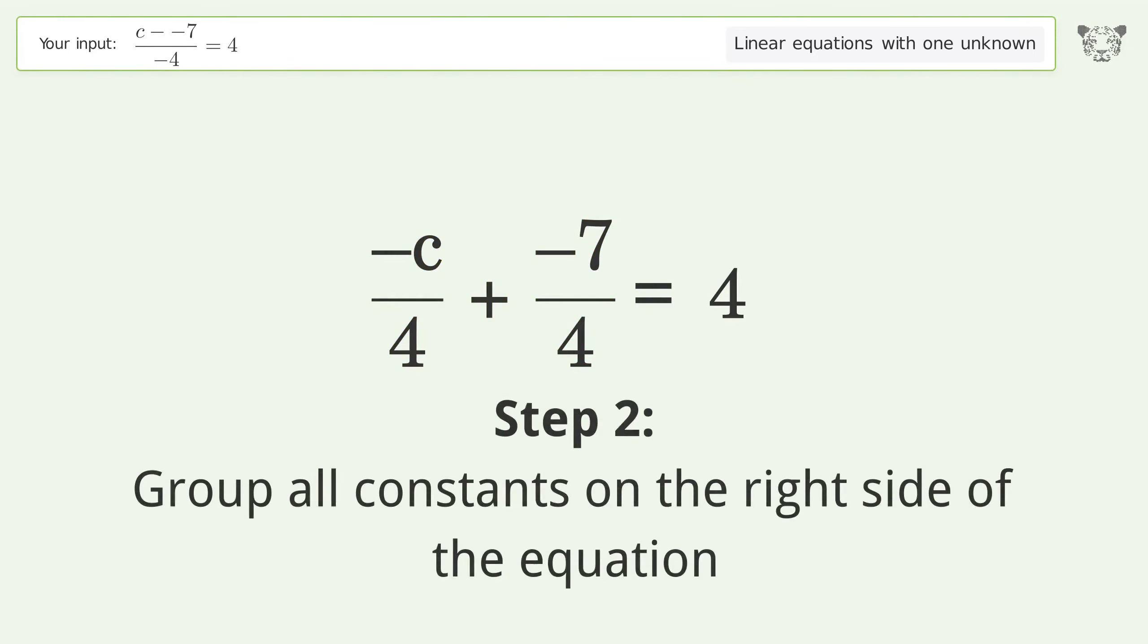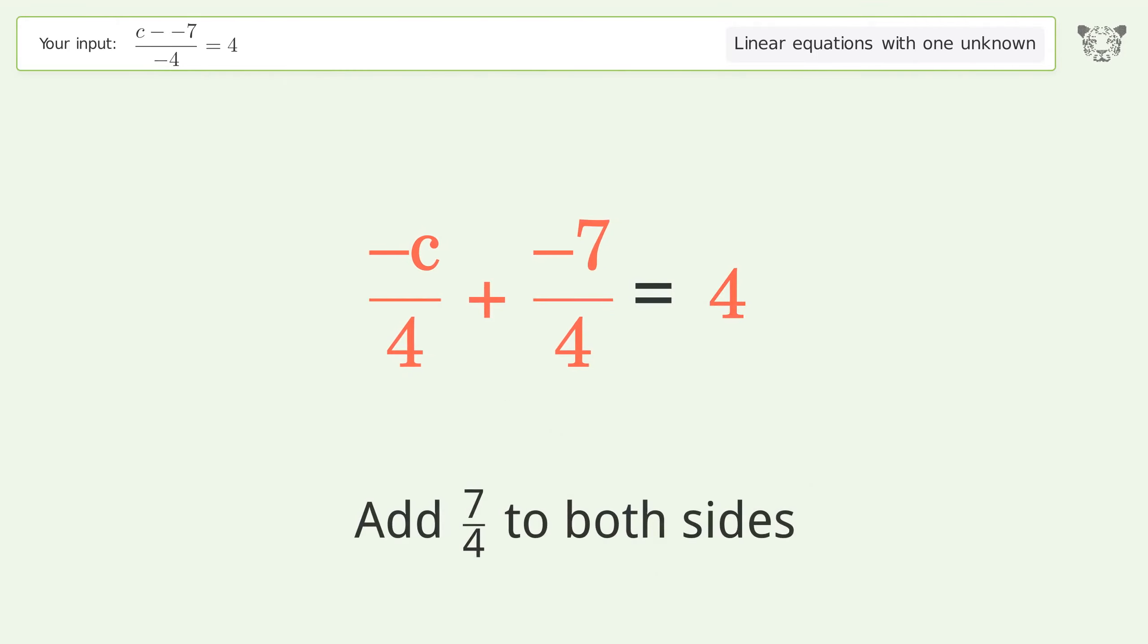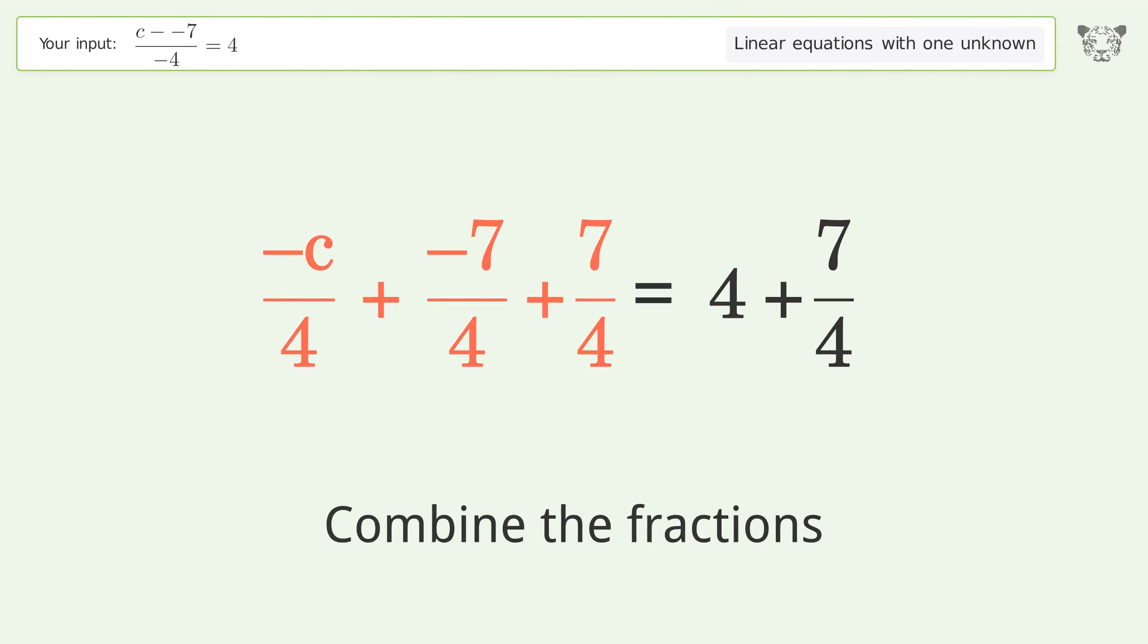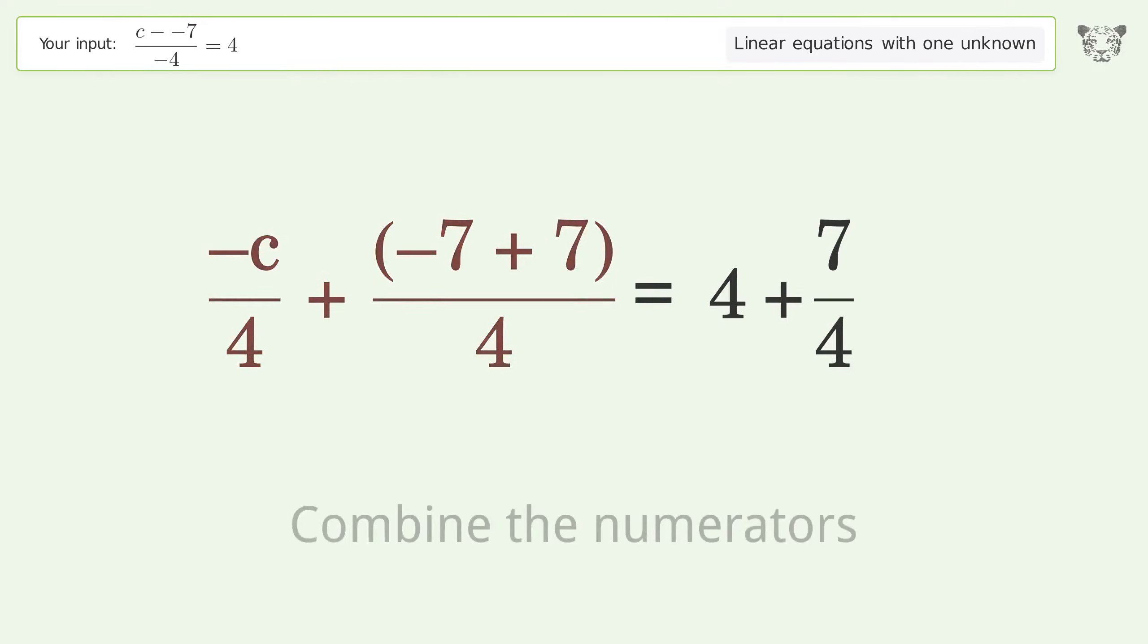Group all constants on the right side of the equation. Add 7 over 4 to both sides. Combine the fractions and combine the numerators.